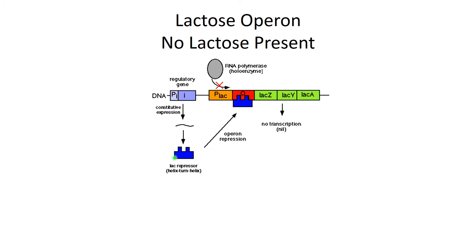What happens is we're constantly transcribing and translating the regulatory gene to produce the repressor protein. The repressor protein binds to a part of the operon called the operator — just a small section of the operon — and when it binds there, it stops transcription and translation of the three structural genes. RNA polymerase wants to come in and transcribe those genes, but the repressor protein binding to the operator prevents that from happening. This makes sense: there's no lactose present, so there's no need to produce those enzymes.